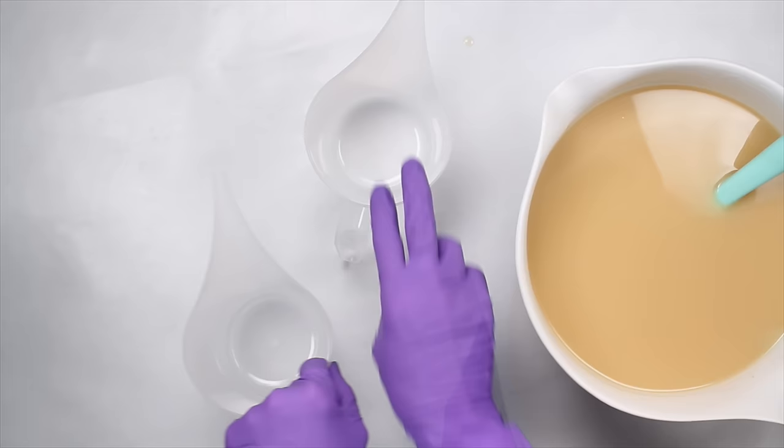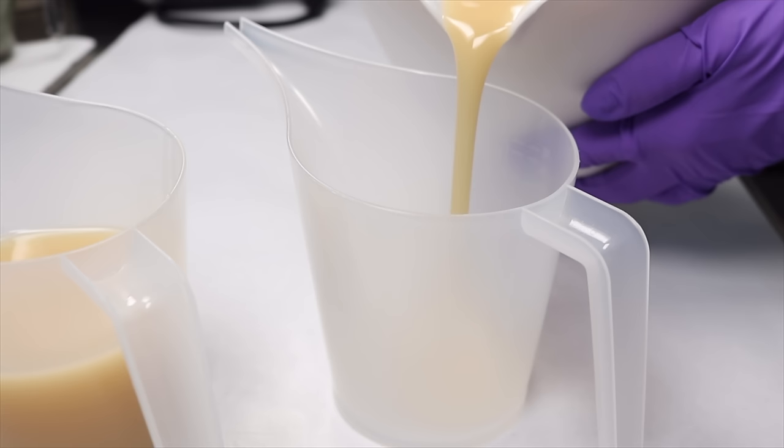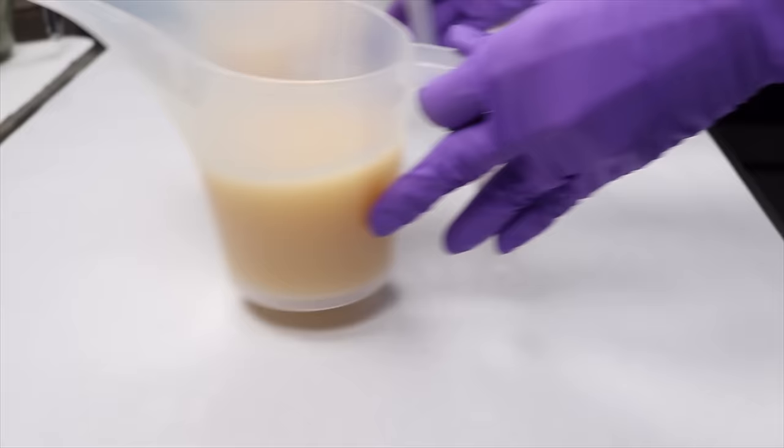For a drop swirl, I typically use 25% of the soap batter for the swirl colors. This batch was about 8 cups of soap, so I poured off 2 cups total, one for each color.